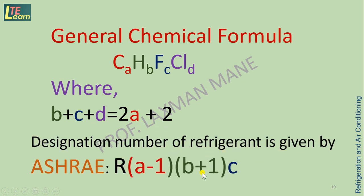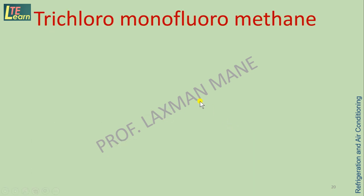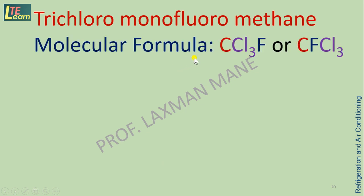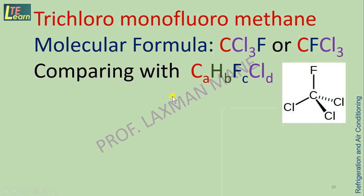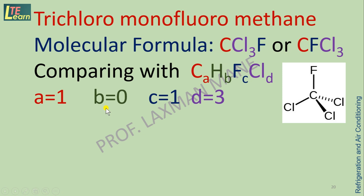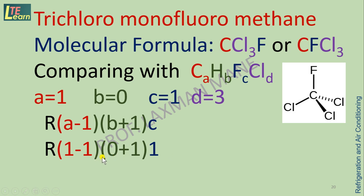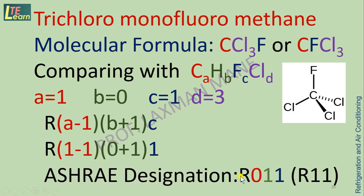The designation number of a refrigerant is given by ASHRAE, written as R followed by the number. For the example of trichloromonofluoromethane, the molecular formula is CCl₃F. Writing the number of atoms: carbon A = 1, hydrogen B = 0, fluorine C = 1, chlorine D = 3. Putting these into the ASHRAE designation and solving mathematically, we find the ASHRAE designation for trichloromonofluoromethane as R11.